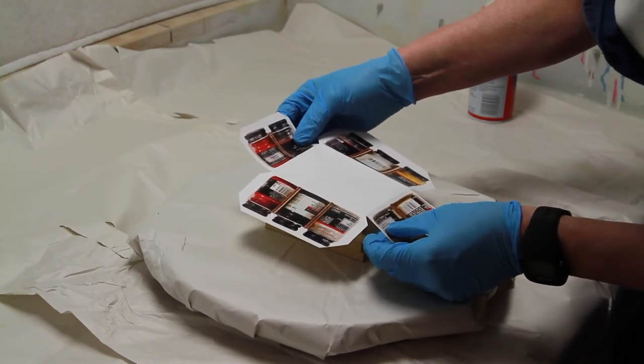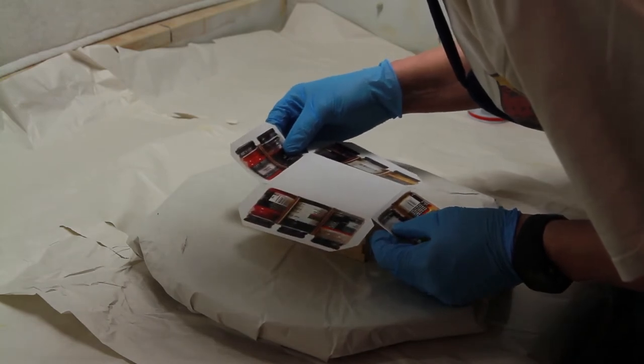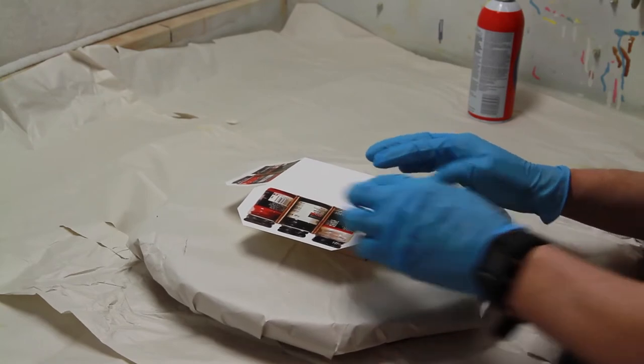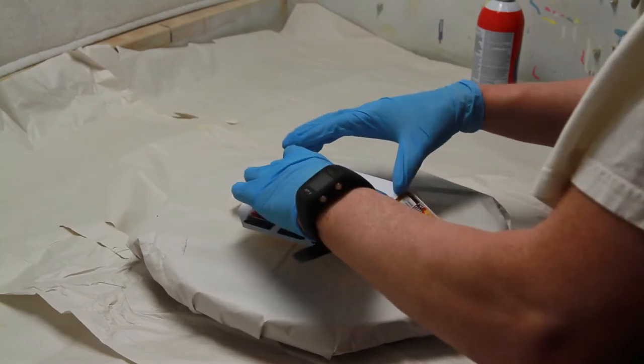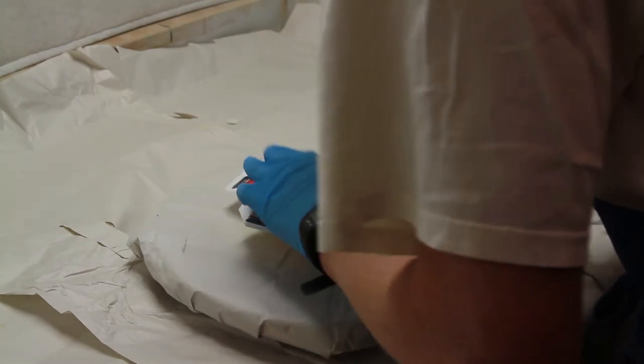Also, if you're doing, say, ten boxes instead of one, you can make a jig to line up the artwork with the box. But you always go for this main center face first. Once you get that, the sides are easy.